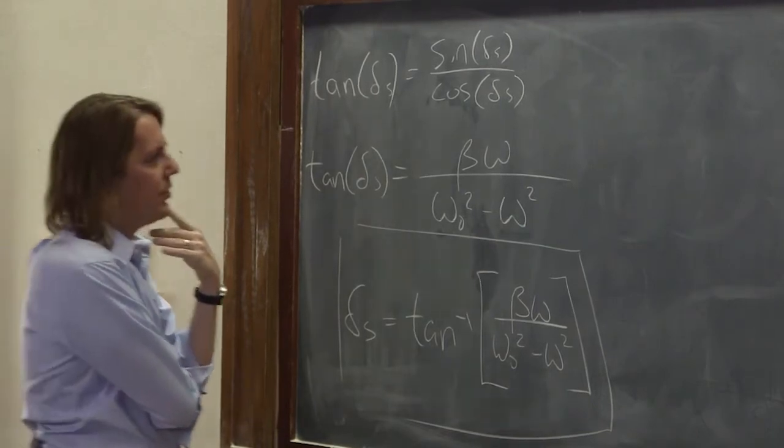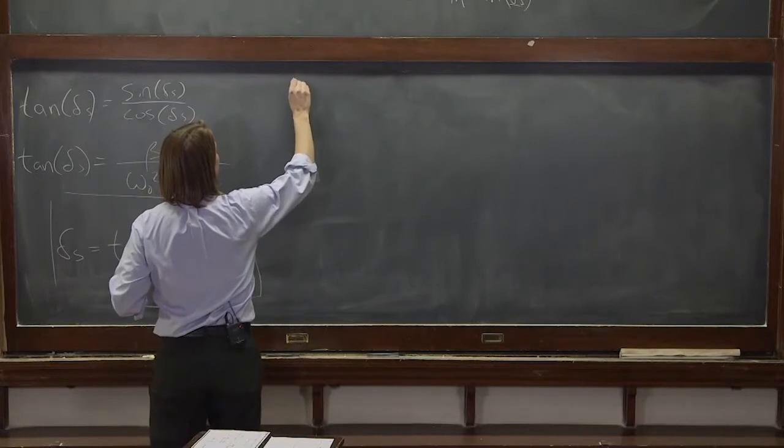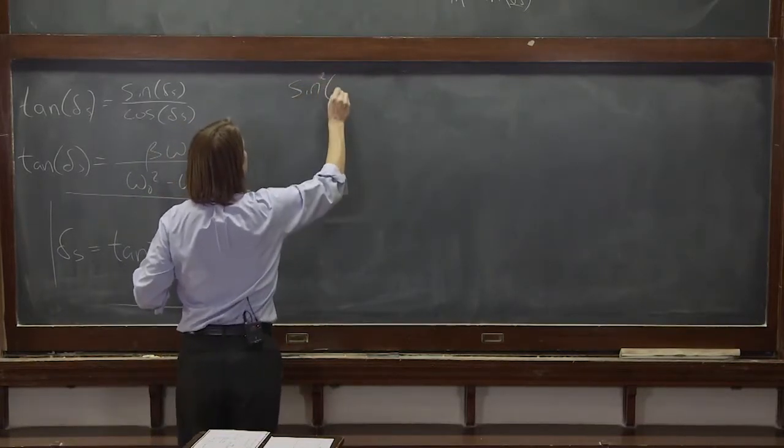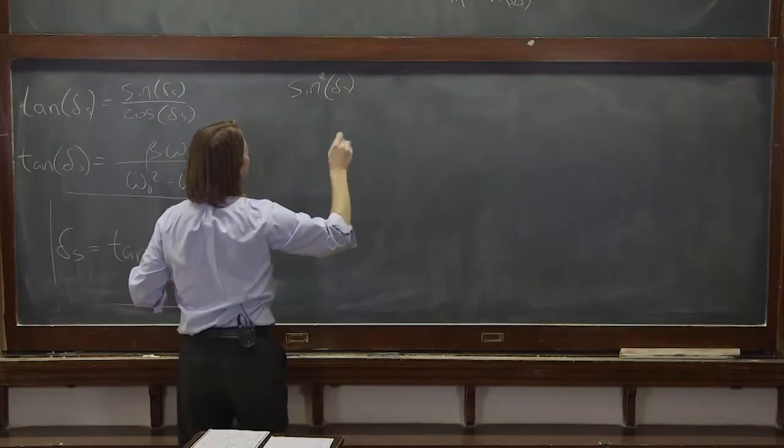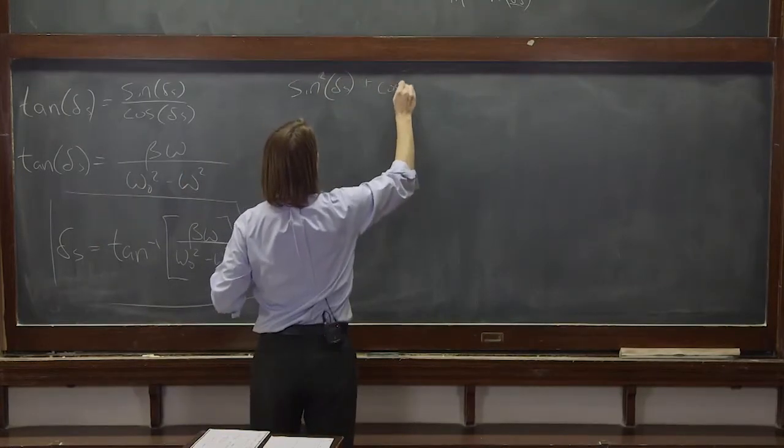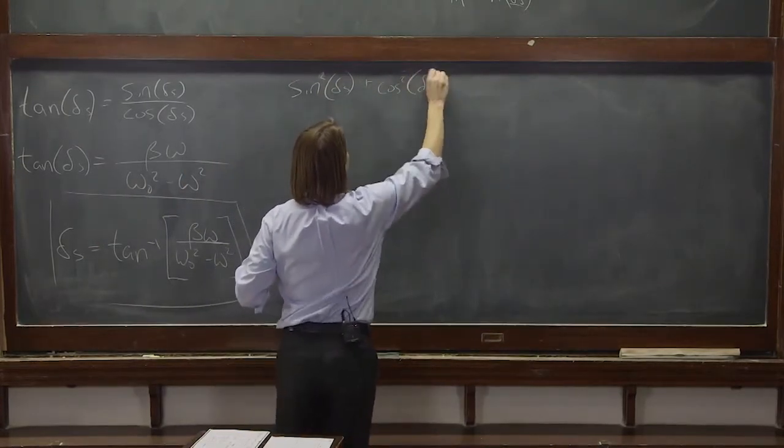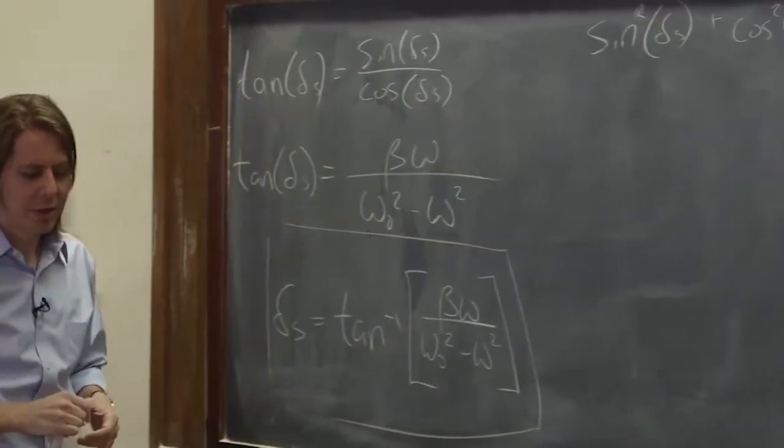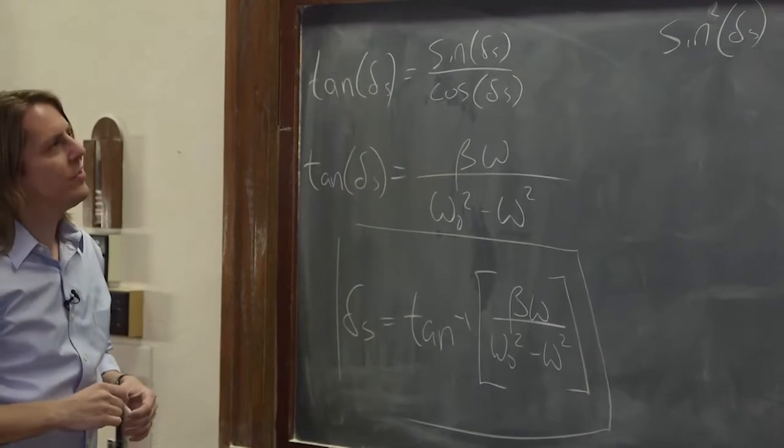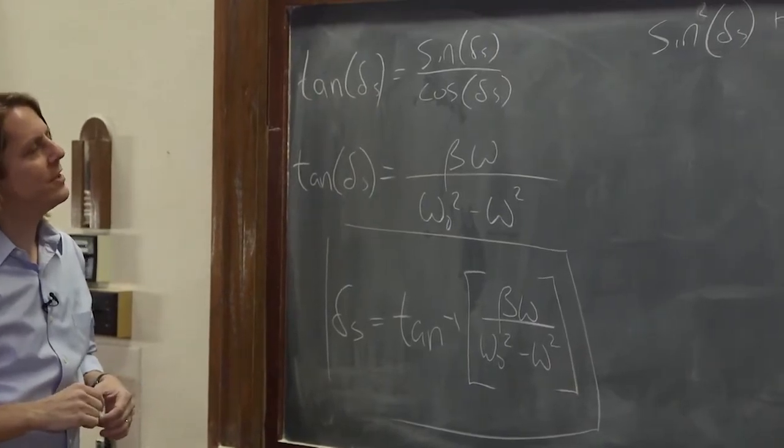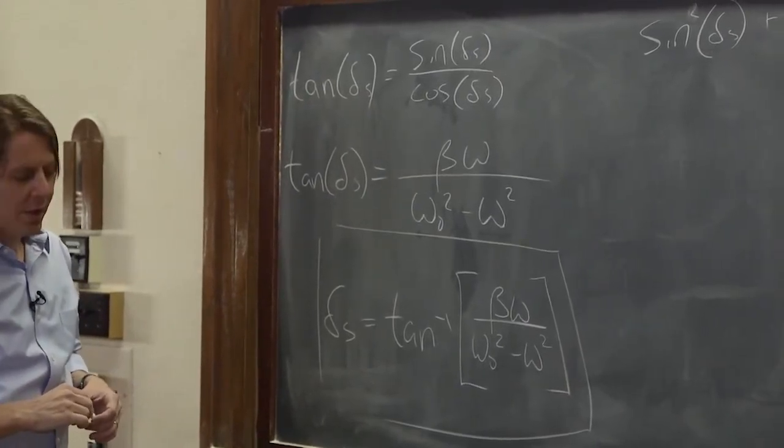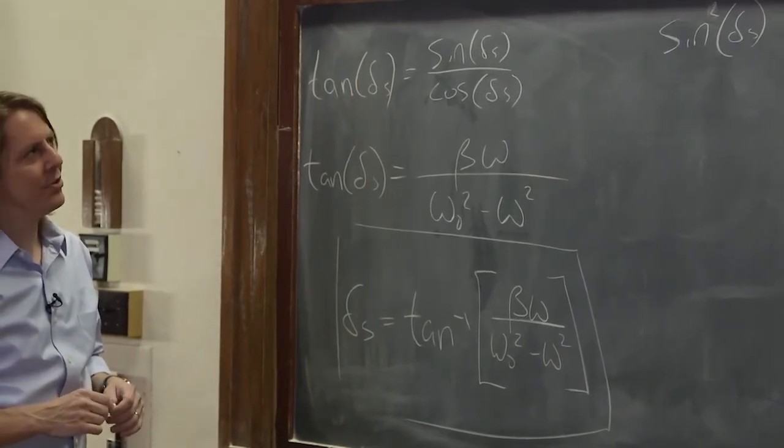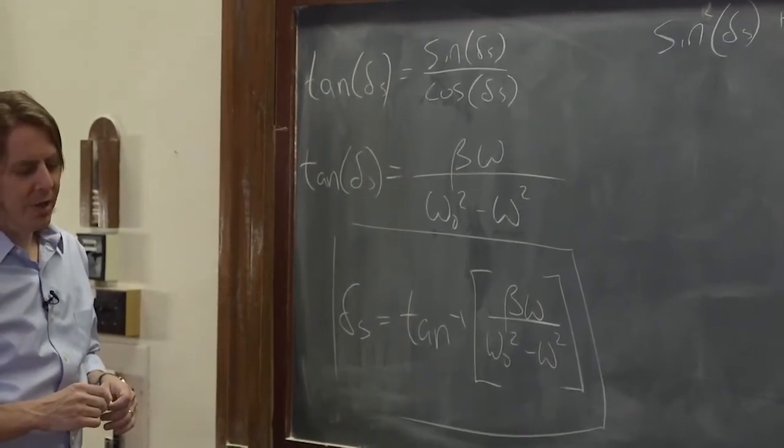The best thing to do is use another trig identity and say, let's use the fact that sine squared of the steady state phase lag plus cosine squared of the steady state phase lag is equal to 1. We always know sine squared plus cosine squared equals 1. So let's use that and see if it gets us anywhere. OK, so we're not doing a ratio. So all those little extra terms aren't going to cancel out. We're just going to have to keep every one of them.